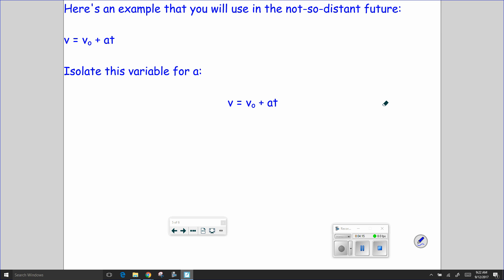I just want to point out that any time you have a little tiny zero by a variable, that means initial. So this is initial velocity. You'll see that quite a bit in this class.